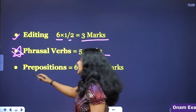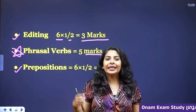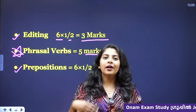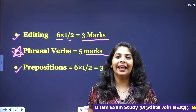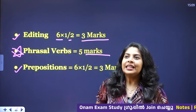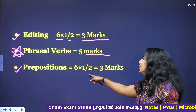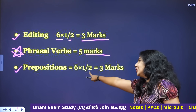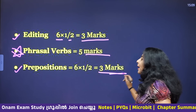Next: prepositions — in, on, off. You can choose the prepositions. That is 6 into half, which is equal to 3 marks.